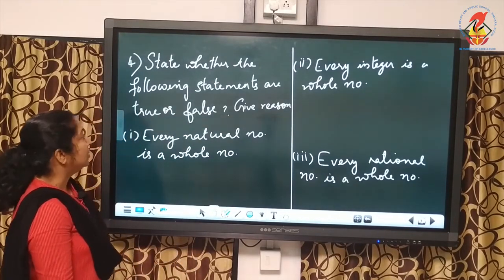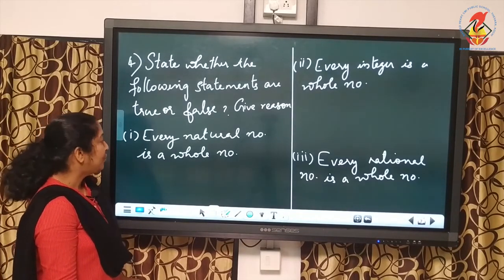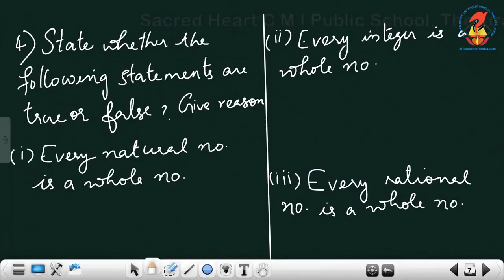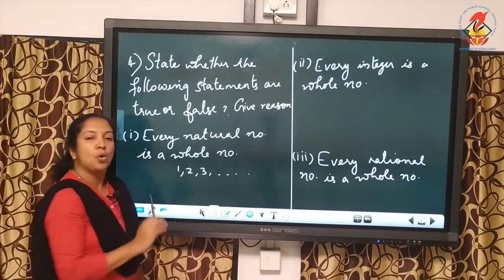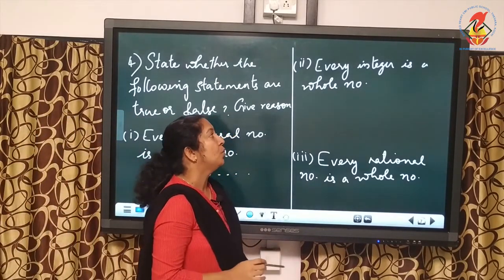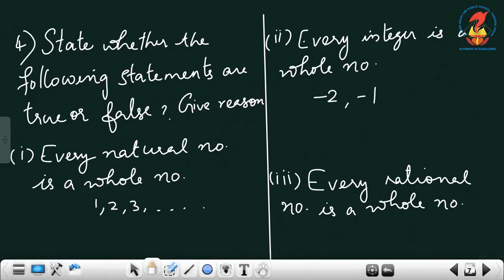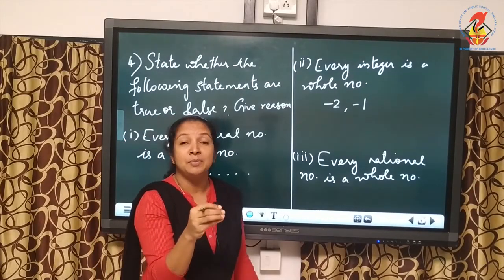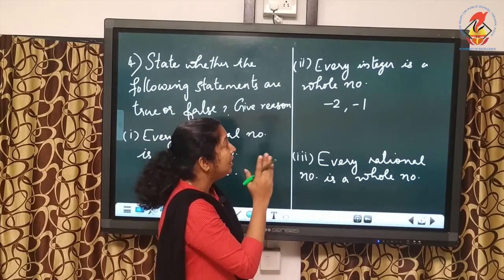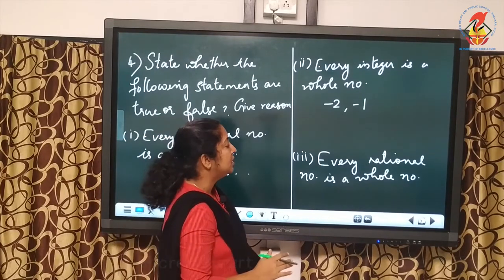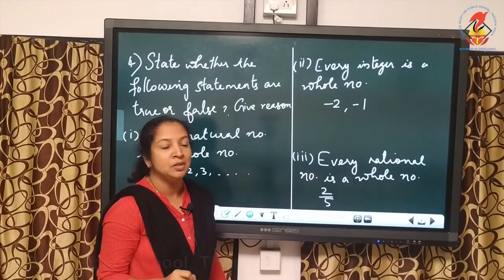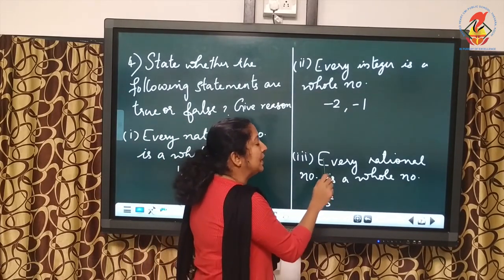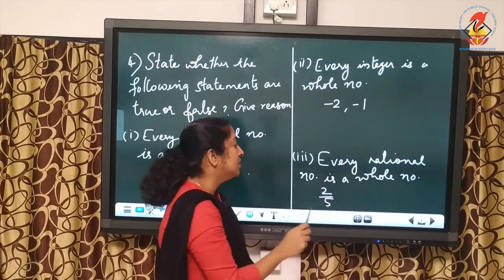Question 4 — state whether the following statements are true or false, with reasons. First: every natural number is a whole number — true, since all natural numbers 1, 2, 3, etc. are also whole numbers. Second: every integer is a whole number — false, because negative integers like -2 and -1 are not whole numbers. Third: every rational number is a whole number — false, since not all fractions are whole numbers.